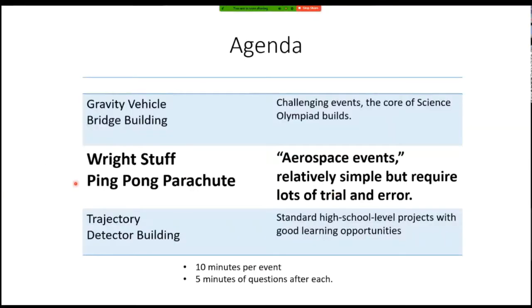Wright Stuff and Ping Pong Parachute - I like to call these the aerospace events because one is a flying airplane, the other one is a bottle rocket. They're relatively simple but require a lot of trial and error, and this might start to sound like a recurring theme in Science Olympiad.